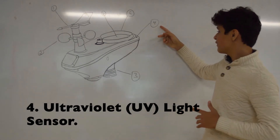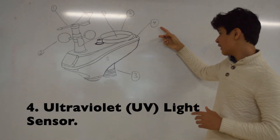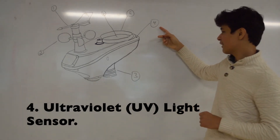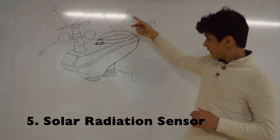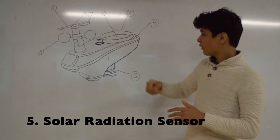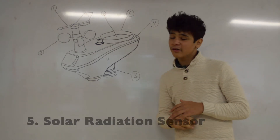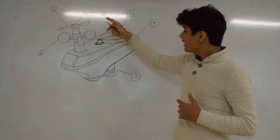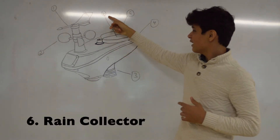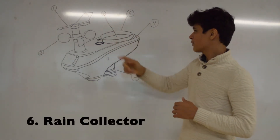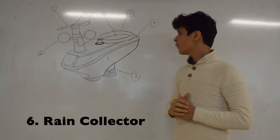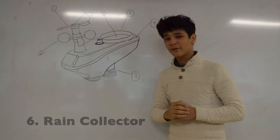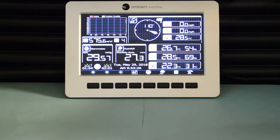This is the UV, our ultraviolet light sensor. This is the solar radiation sensor. This is the rain collector, which measures rain collected over time and rainfall rate. This is the ambient weather display.